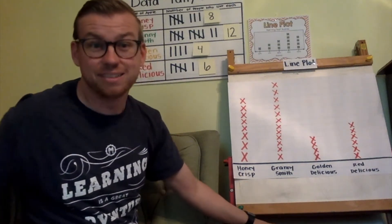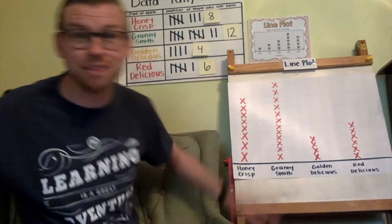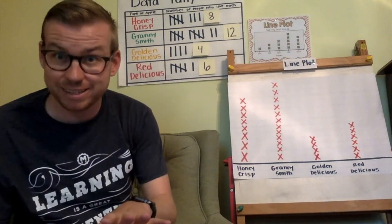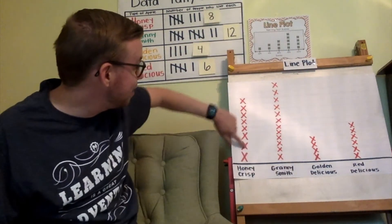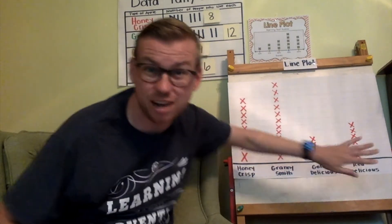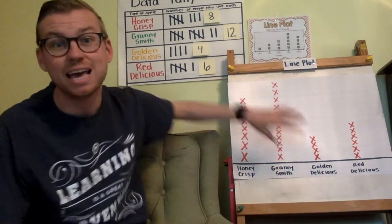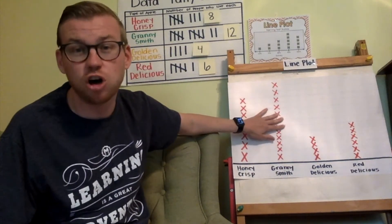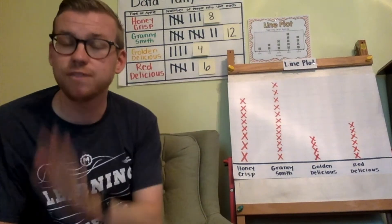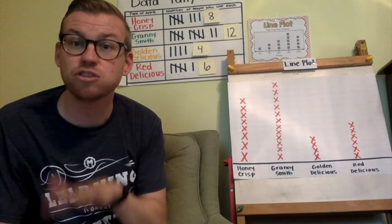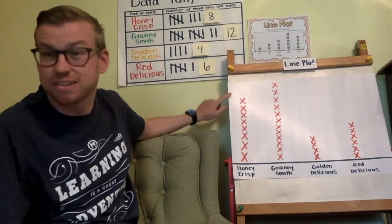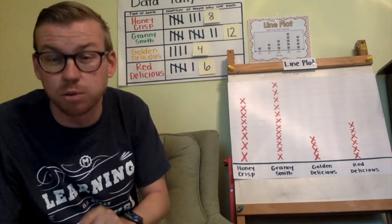This is our line plot displaying the data from the tally chart. It's not perfect because some X's are a little bigger than others, but it still accurately shows the data. In order to figure out how many people are in each column, we can't look up the side because there are no numbers — we have to count the X's.